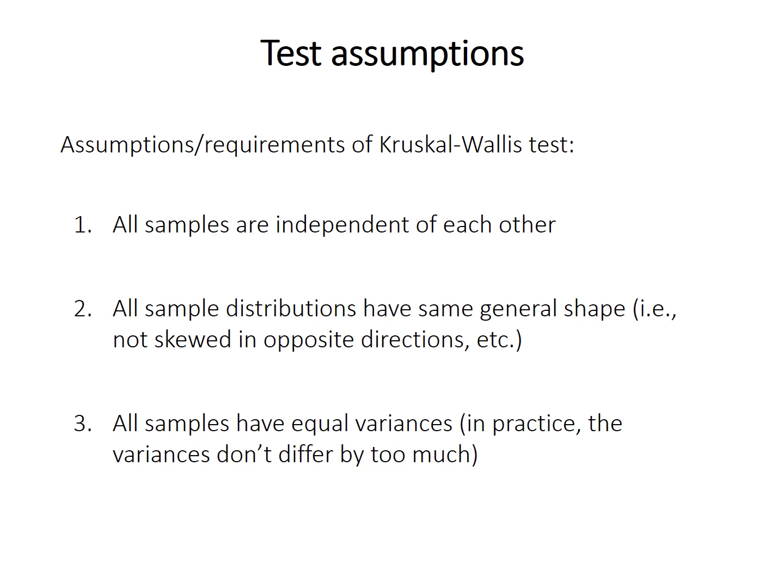Although the Kruskal-Wallis test is non-parametric, it does have some other assumptions. As in virtually all tests, the samples must be independent of one another. The distributions should have the same general shape — not skewed in opposite directions, for example — and they should have equal variances. But in practice, as long as the variances don't differ by too much, like the largest isn't more than about four times the smallest, you should be okay.